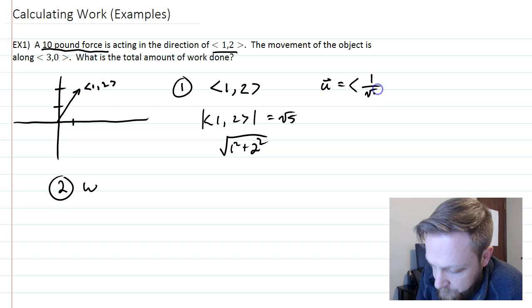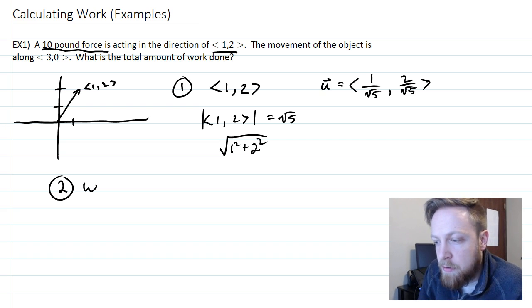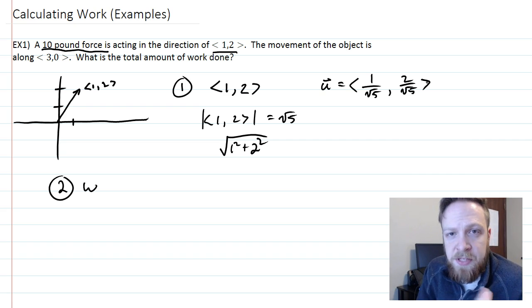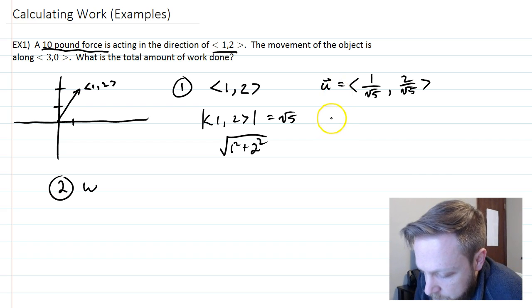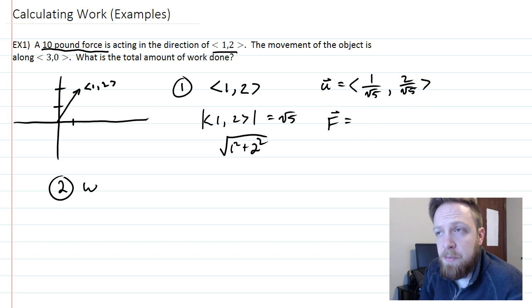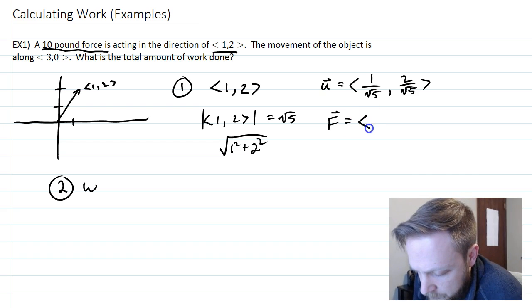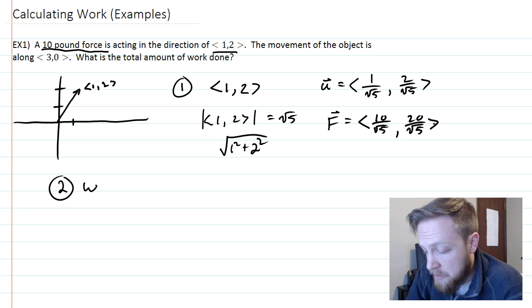So my unit vector is <1/√5, 2/√5>. And I'm not going to be radicalizing because it's an application problem, I'm going to have a decimal answer in the end. We're going to multiply by 10, so my actual force vector is when we take the unit vector and times it by 10 so that it is actually the proper length. So this is <10/√5, 20/√5>.